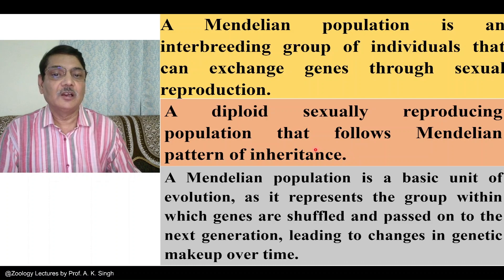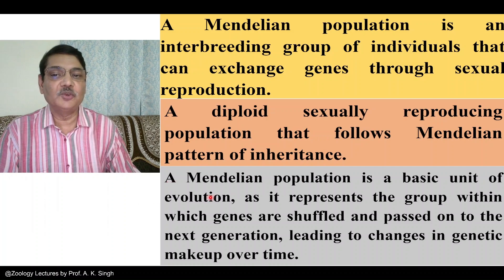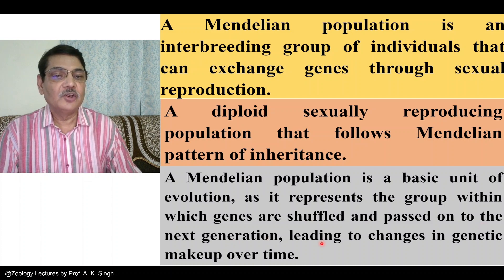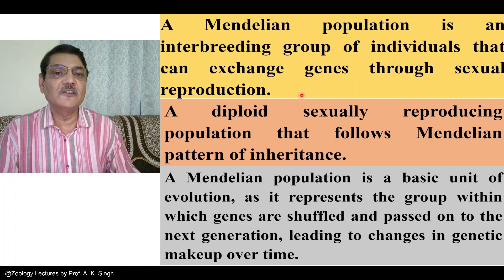These aspects of genetics are applicable in such populations. A Mendelian population is a basic unit of evolution, as it represents the group within which genes are shuffled and passed on to the next generation, leading to change in genetic makeup over time. These are three separate definitions for Mendelian population.